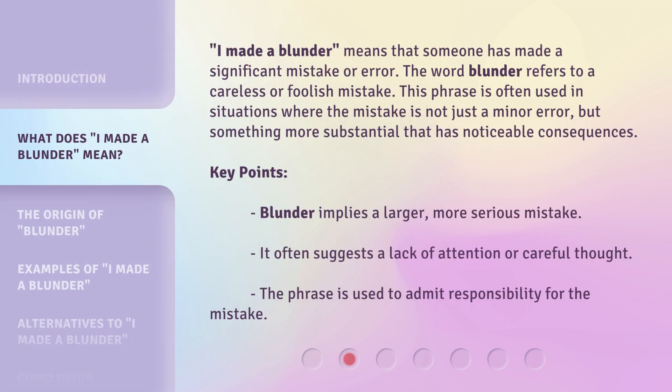'I made a blunder' means that someone has made a significant mistake or error. The word 'blunder' refers to a careless or foolish mistake. This phrase is often used in situations where the mistake is not just a minor error, but something more substantial that has noticeable consequences. Key points: 'blunder' implies a larger, more serious mistake; it often suggests a lack of attention or careful thought; and the phrase is used to admit responsibility for the mistake.